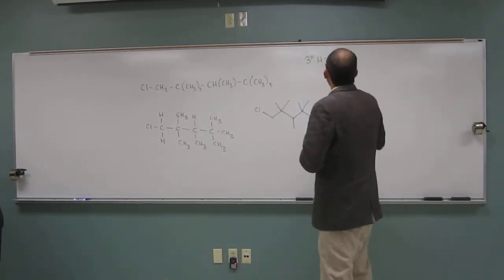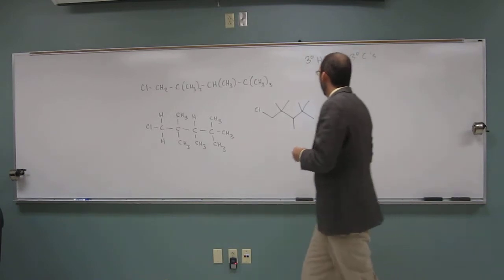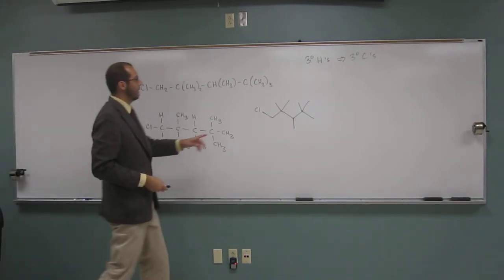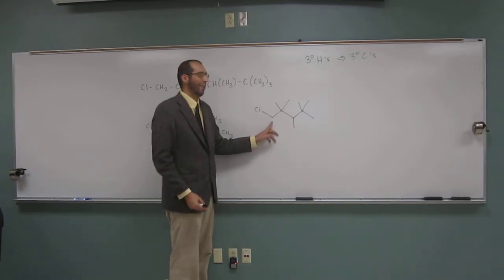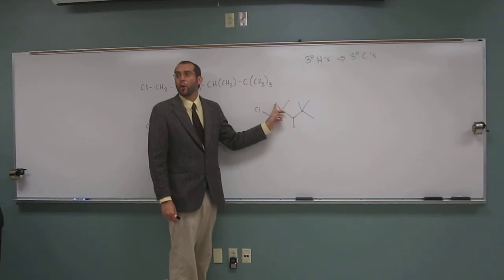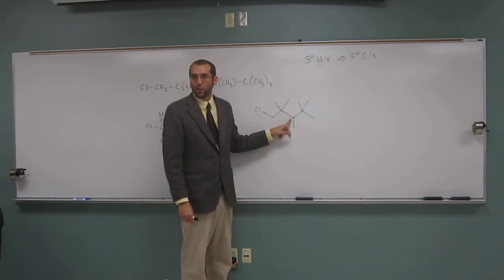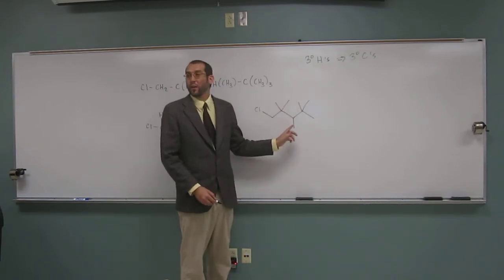So now we're going to ask ourselves, where are the tertiary carbons? So remember, a tertiary carbon is attached to three other carbons. So when we look at this carbon, how many is it attached to? One. Just one. This one, this is a quaternary carbon. These ones, what are they? Methyl. Methyls are primary carbons. This one here is a what? Tertiary. Tertiary, so that's the one we're looking for. And this one? Quaternary. And these ones? Primary.